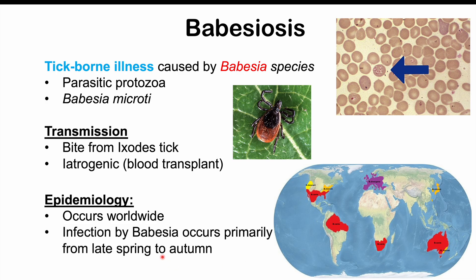Infection by Babesia occurs primarily from late spring to autumn, when people are going out camping — which is why we see tick-borne illnesses increase during this time. Because the symptoms of this condition can be quite varied and non-specific, it can be an important cause of fever of unknown origin, especially in patients from endemic areas.